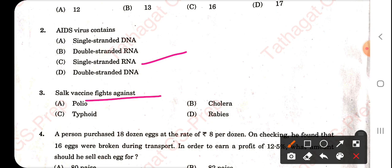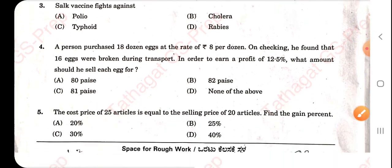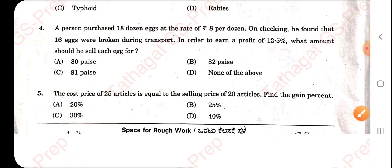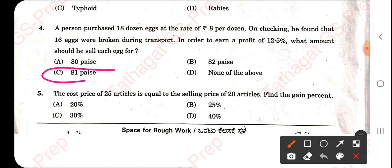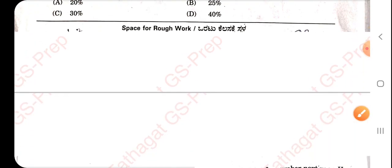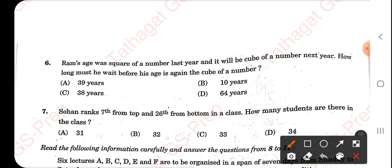For the aptitude portion the right answer is option C, that is 81 paise. For this question the right answer is 25 percent. Being a key answer video I will just mark the answer and will not explain in detail.